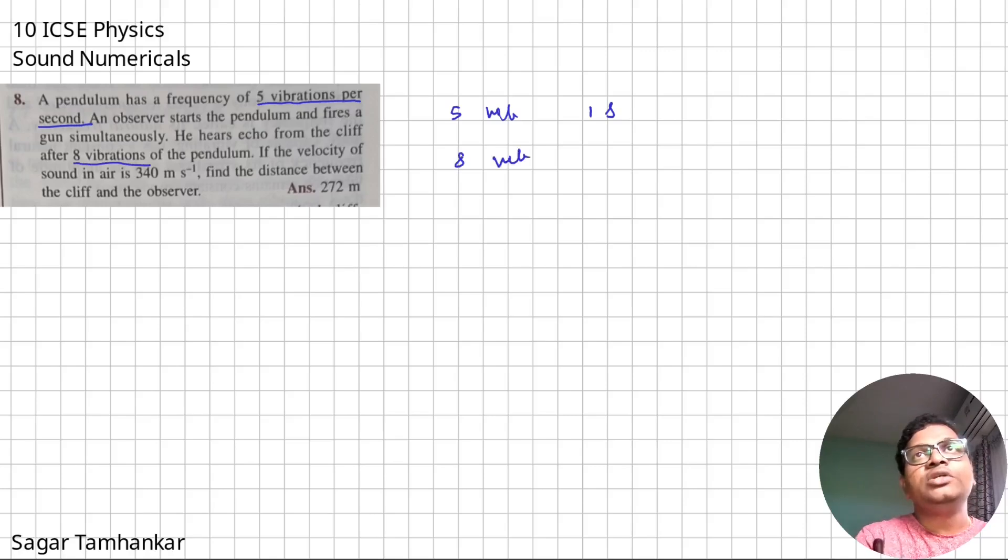So therefore, 8 vibrations will take T seconds. How do we find that T? We can do cross multiplication or unitary method. So this will be 1 into 8 upon 5 and that will be 1.6 seconds. So therefore, the echo is heard in 1.6 seconds.